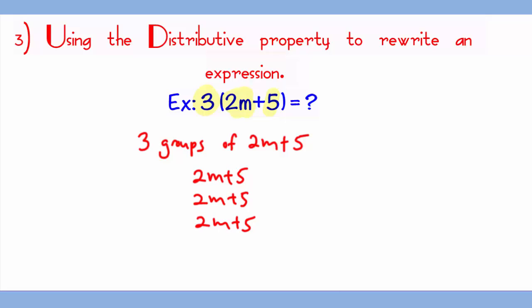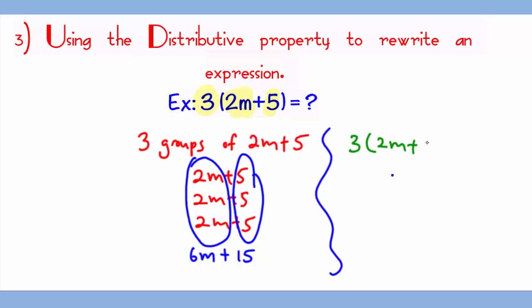And if you solve it, you would have 6m plus 15. Now, how do you do the exact same thing using the distributive property? 3 times (2m plus 5). You will be sharing 3 with the 2m first, which gives you 3 times 2m, 6m. And then 3 will be shared with the 5, which is 3 times 5 gives you 15. So you still get 6m plus 15.